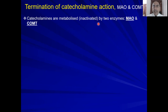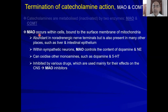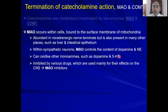The first enzyme is MAO — monoamine oxidase. MAO occurs within cells, bound to the surface membrane of mitochondria. It is abundant mainly in noradrenergic neurons but is also present in other tissues such as liver and intestine. Within the sympathetic neuron, it controls the content of dopamine and norepinephrine. It can also oxidize other monoamines such as dopamine and 5-hydroxytryptamine (serotonin). It is inhibited by MAO inhibitors, which are drugs used for the treatment of depression.